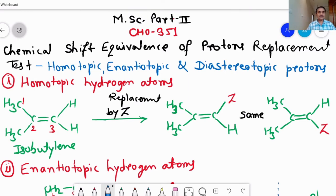Good morning, today we will see chemical shift equivalence of protons replacement test. It is for homotopic, enantiotopic, and diastereotopic protons. First of all, we will see the homotopic hydrogen atoms. For this we consider isobutylene as an example.